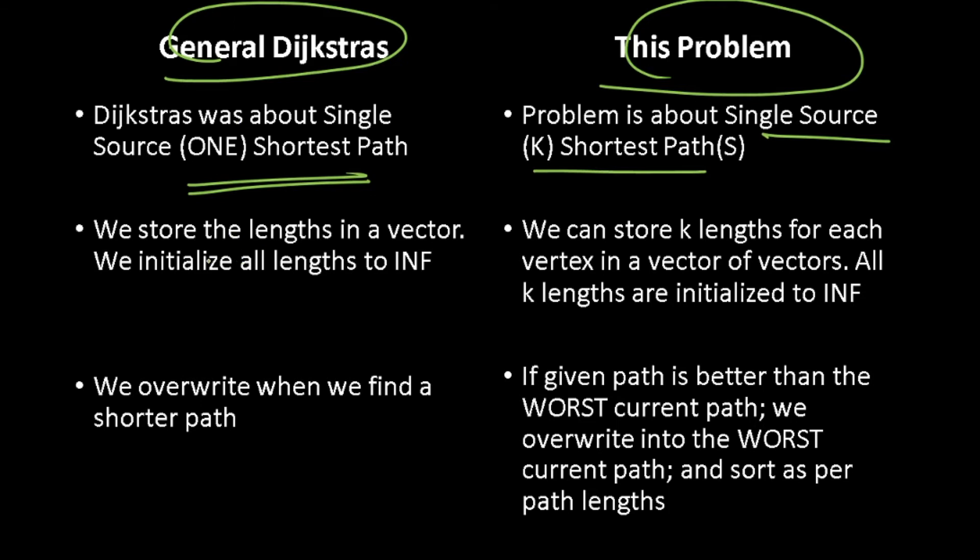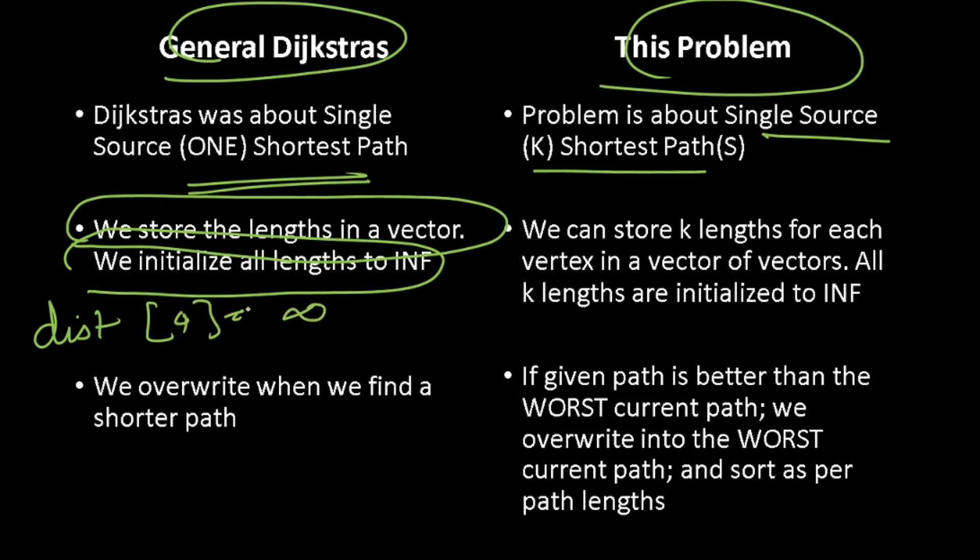For Dijkstra's, we will store all lengths in a vector and we will initialize all these lengths to infinity. So, in other words, we will store things like distance to 4 equals infinity, that's where we will start and then we will relax our way until we will get distance 4 equals answer.